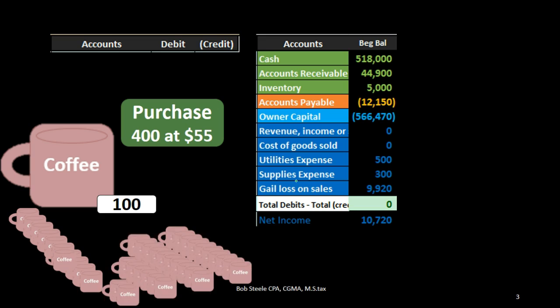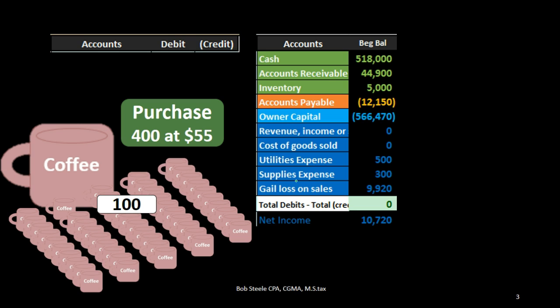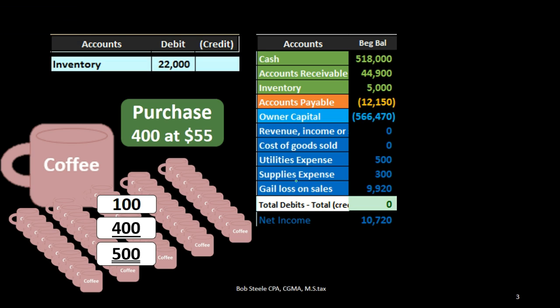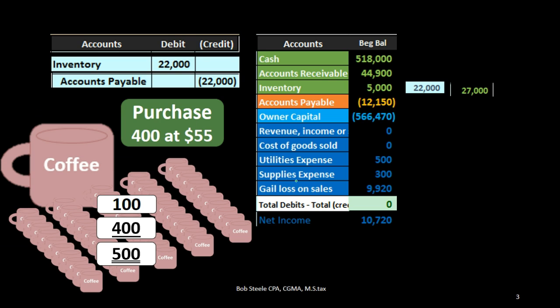We're going to have a purchase of 400 units at $55. So in terms of units, we had 100 and now we purchase 400, giving us 500 units. The journal entry to record that is straightforward and is the same under all methods. There's no estimate for the journal entry related to the purchase — in this case 400 times 55. If we purchased it on account, we debit inventory $22,000, increasing inventory from $5,000 to $27,000, and credit accounts payable. The liability increases at that point.